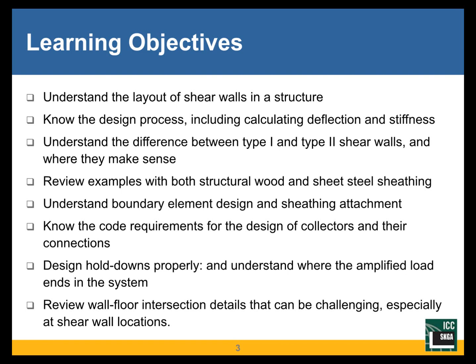With lots of different floor systems being used, it's good to know how these shear walls tie into different forms. We'll talk about the design process, including calculating deflections, stiffness of shear walls, and the differences between Type 1 and Type 2 shear walls, and why one might be better than the other. We'll review examples with both structural wood and sheet steel sheathing — the primary fuse mechanisms for resisting earthquake loads — and cover boundary element design, why omega-naught is required, code requirements for collectors and connections, proper hold-down design, transitions to a slab below, and details of how shear wall loads pass through the floor.